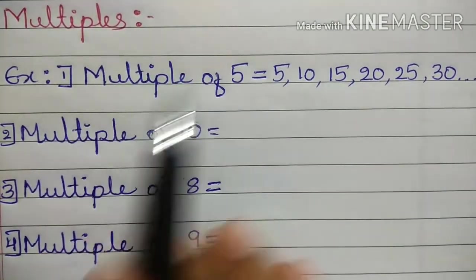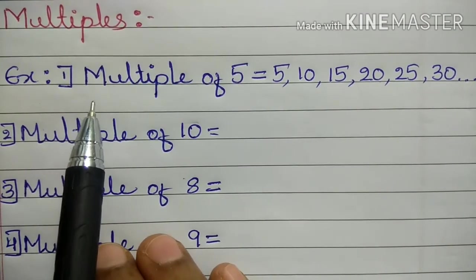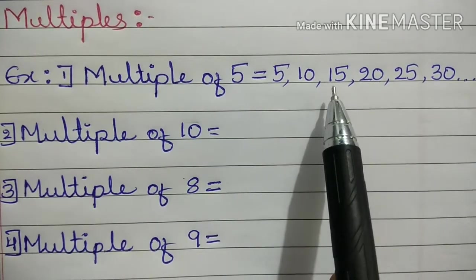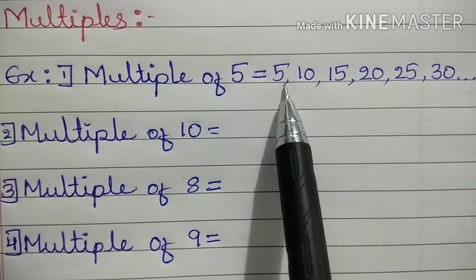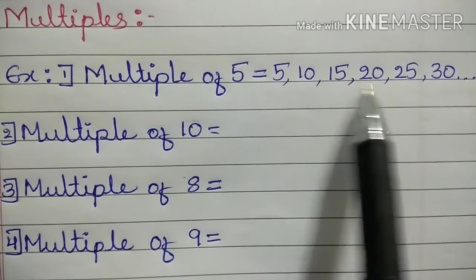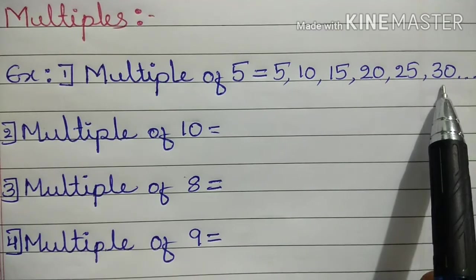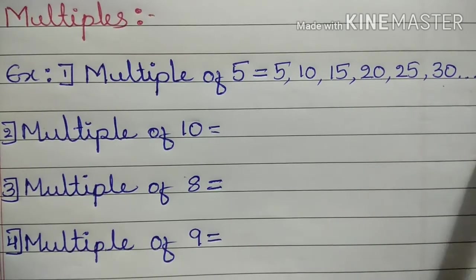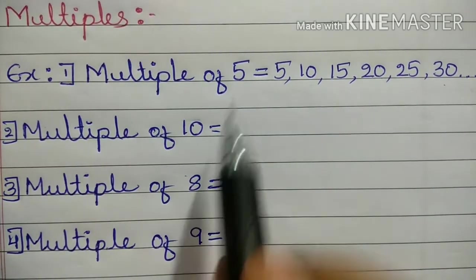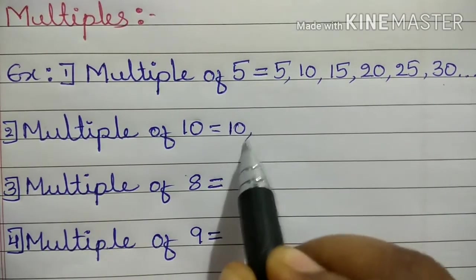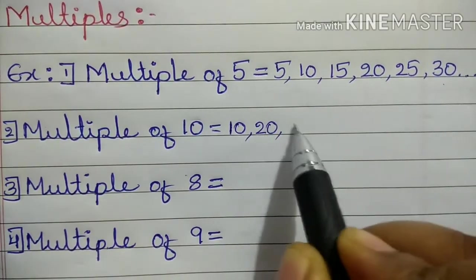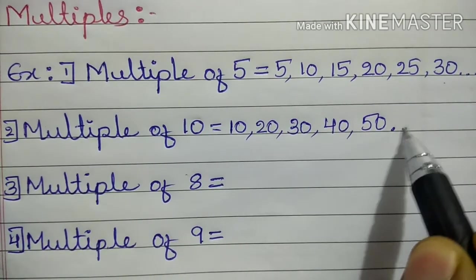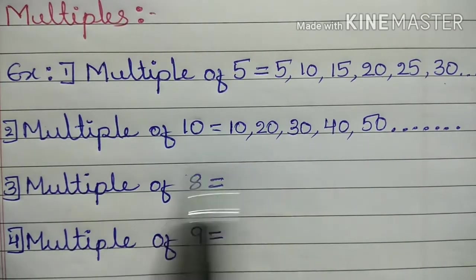Next: multiples. In that, first example, multiple of 5. Multiple of 5 means it is nothing but the multiplication table of 5. 5 times 1 is 5, 5 times 2 is 10, 5 times 3 is 15, 5 times 4 is 20, 5 times 5 is 25, 5 times 6 is 30, and so on. So on means infinity, it is still there. Next, multiple of 10. 10 times 1 is 10, 10 times 2 is 20, 10 times 3 is 30, 10 times 4 is 40, 10 times 5 is 50, and so on. It is nothing but multiples of 10.